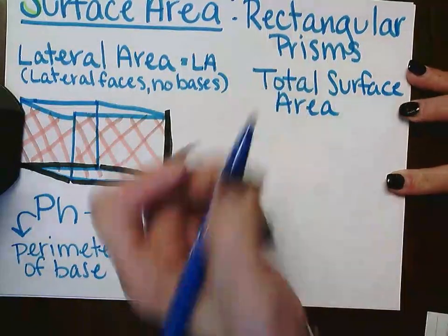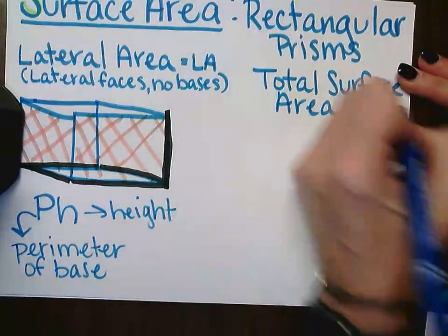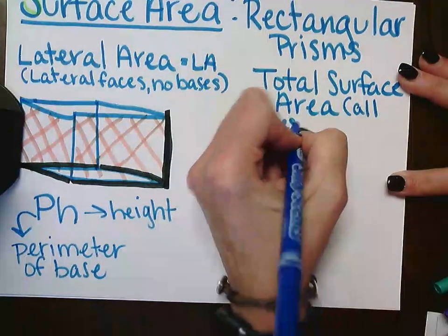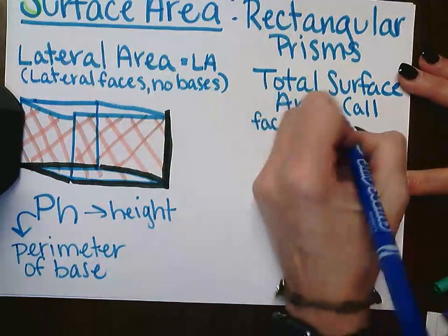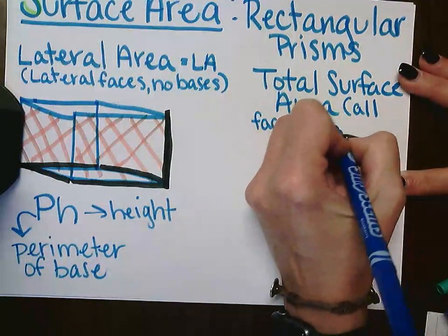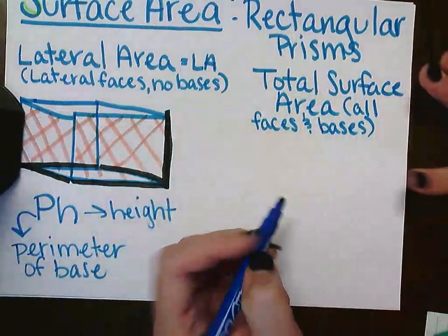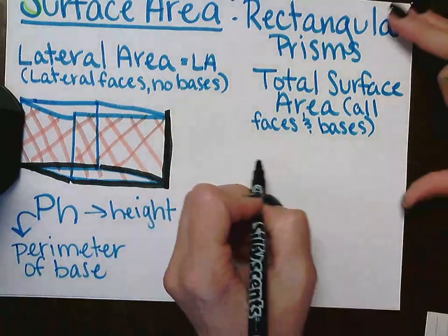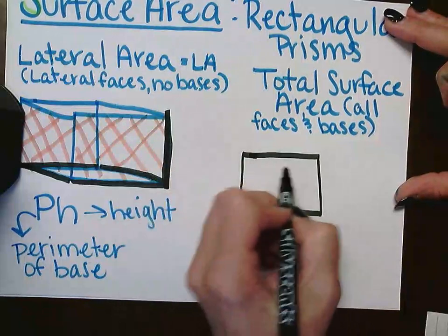Now, total surface area is all faces and bases — the whole shape, including the top and the bottom. Let me draw you a prism.